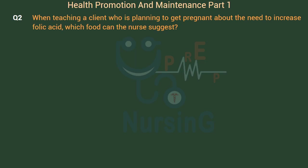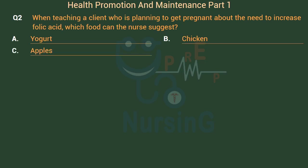When teaching a client who is planning to get pregnant about the need to increase folic acid, which food can the nurse suggest? Option A: Yogurt. Option B: Chicken. Option C: Apples. Option D: Spinach.